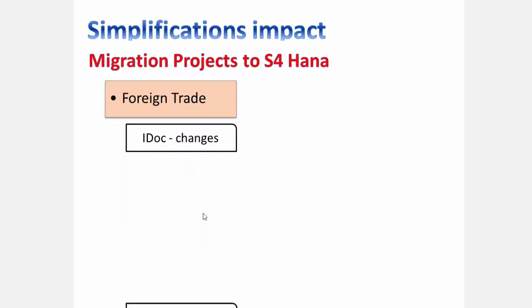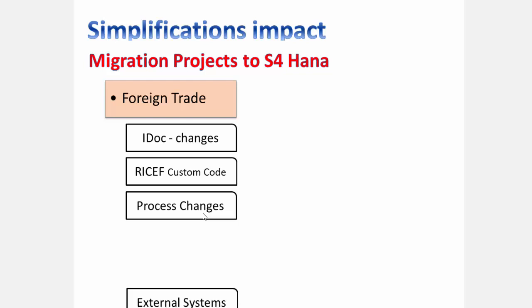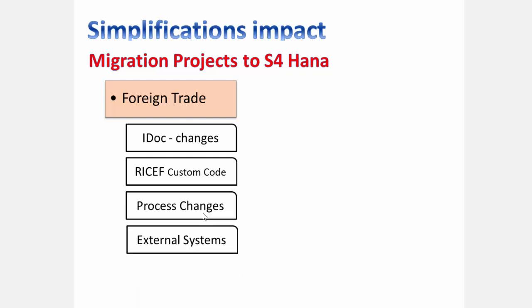In IDOCs and all the custom objects built around customer master fields, material master fields, sales order fields, and finance fields will be changing. Based on that, custom code validation needs to be conducted, and there are a lot of process changes because as part of the simplification, everything is brought into GTS. There will be a huge set of process impacts, and external systems integrated for different kinds of foreign trade reporting will also have impacts.